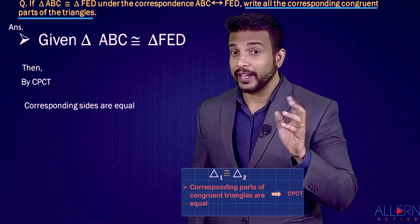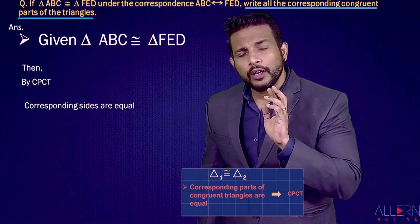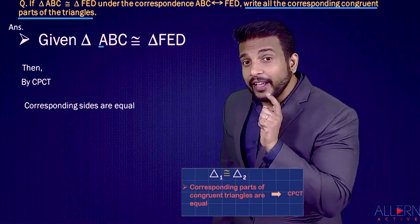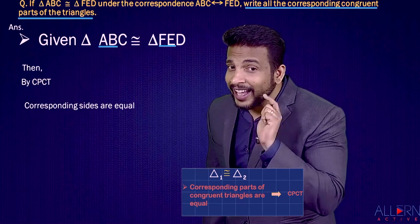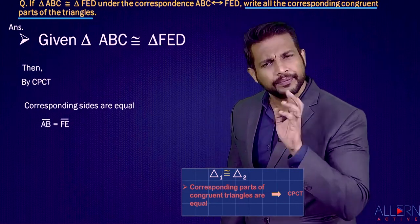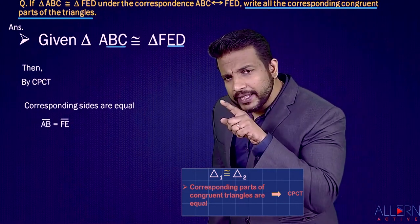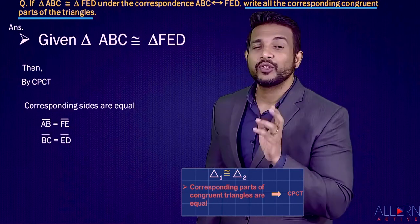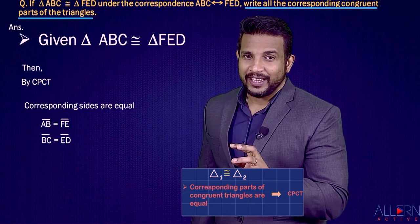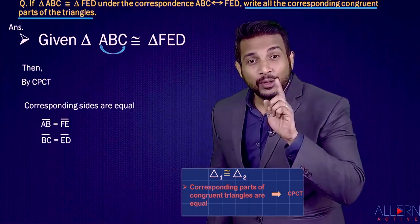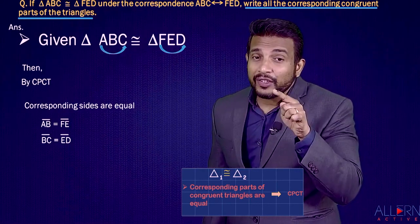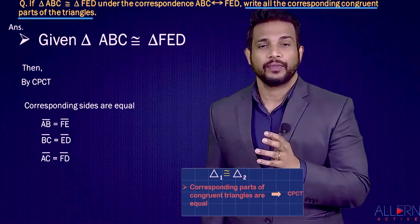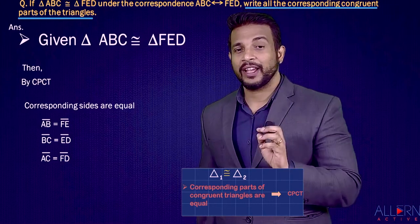We don't even need the figure — we can pick it up directly. Side AB corresponds to FE, so segment AB equals segment EF. For BC — the second and third vertices — the corresponding side is ED, so segment BC equals segment ED. For AC — the first and third — the corresponding side is FD, so segment AC equals segment FD. The bar above denotes the segment.